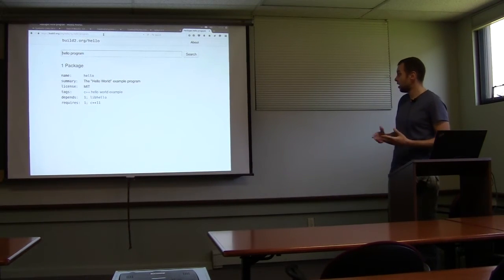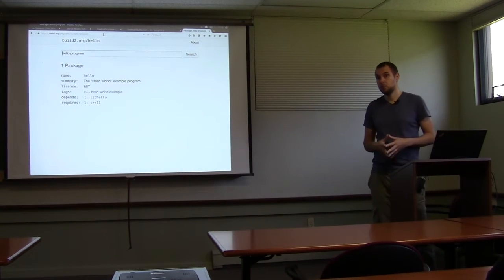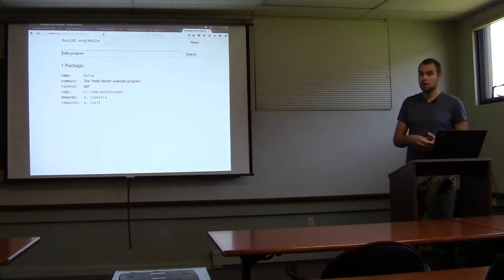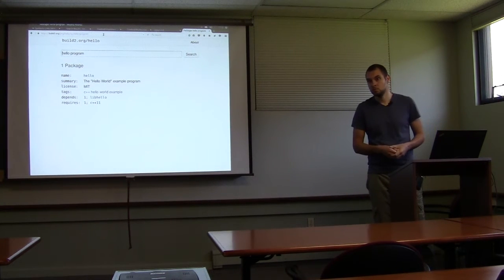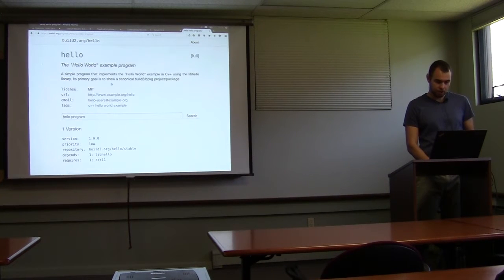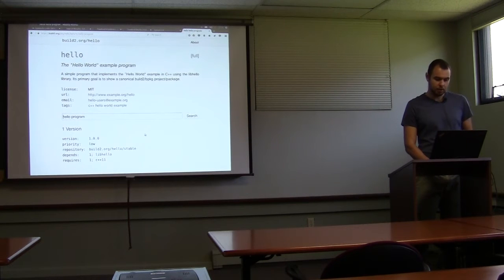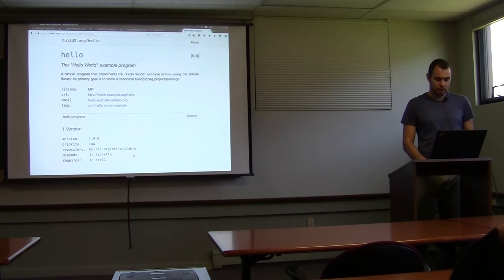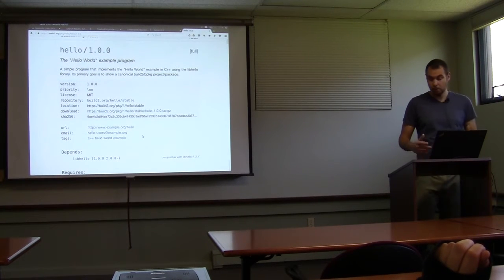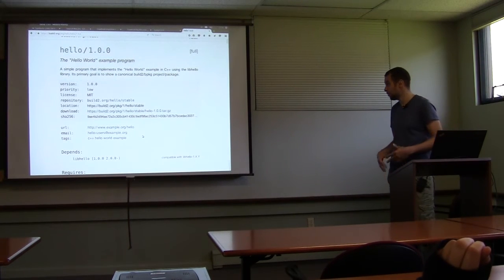You'd check the license — GPL vs MIT — and the number of dependencies. Then you choose one. Here the decision was made for us. You check the version: some are stable, some in testing — again, here just one version. So we decide we like it and want to build it. We'll switch to the package manager.